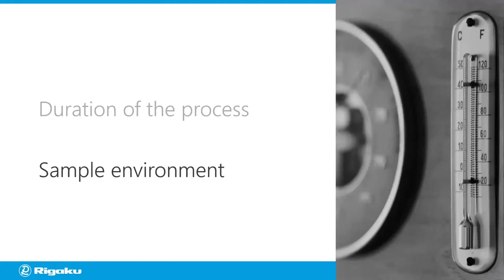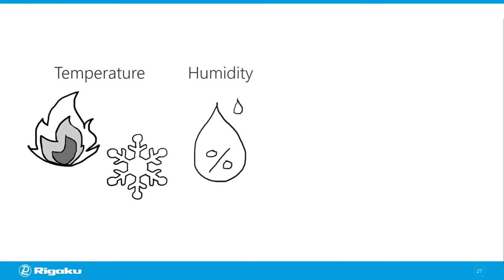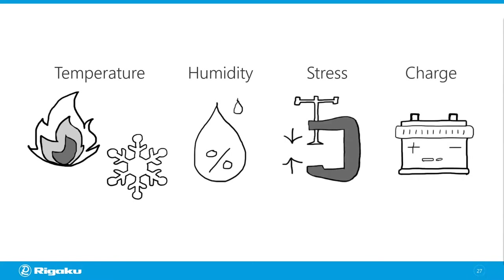Now let's talk about the sample environment. There are many factors you can change, but typical ones include temperature — heating or cooling the sample — humidity, stress such as tensile or compressive stress, and you can even charge or discharge a battery to see what happens. To change those environmental parameters you'll need some sort of in-situ chamber.